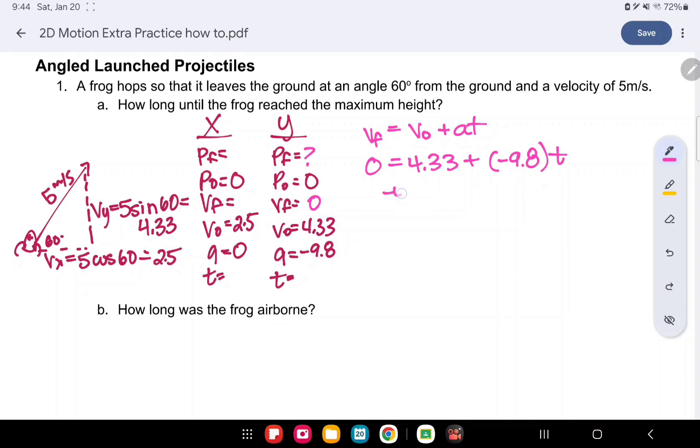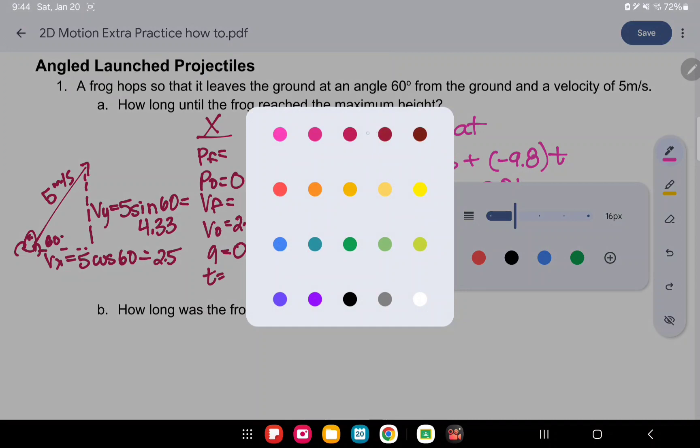So move this over here. Divide this over here. And we're left with a time of 0.442 seconds. That is how long it takes for the frog to reach the maximum height.